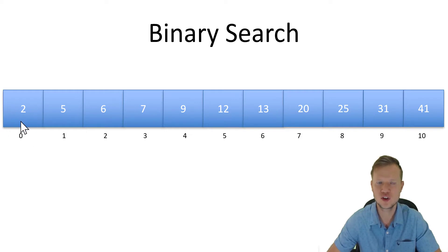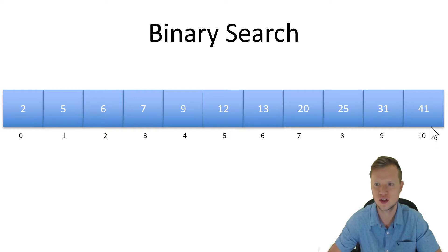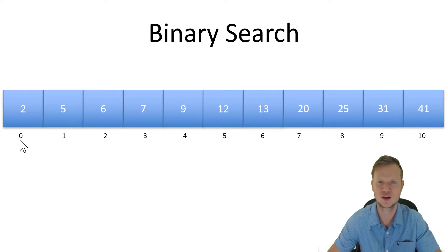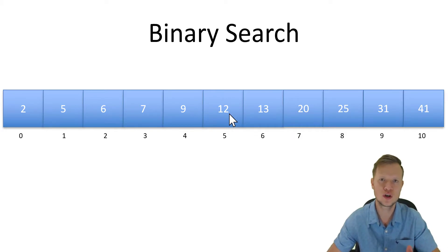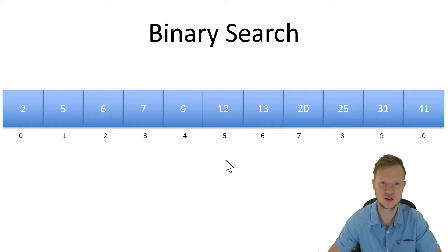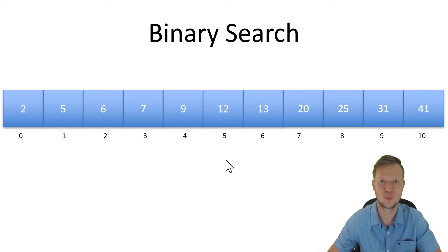How does binary search work? It's actually quite simple. We first have the full array and we define the first index as the low value and the last value in the array as the high value. Then we take the high index (10) and low index (0), add them together and divide by two to get a middle value. So now we've got a low, high, and middle value.